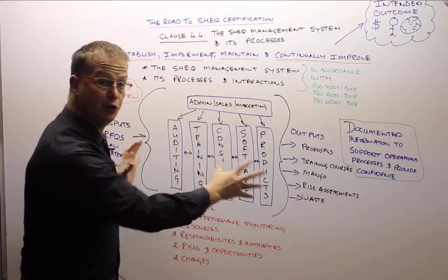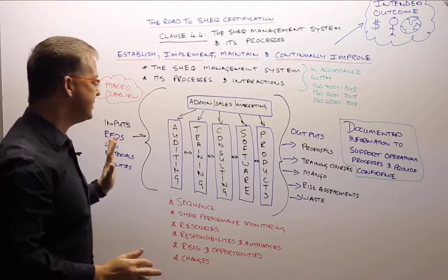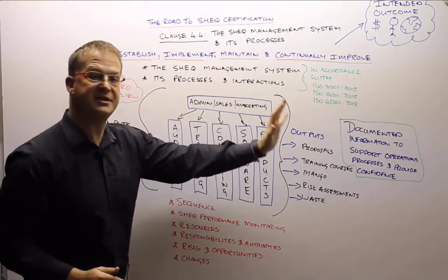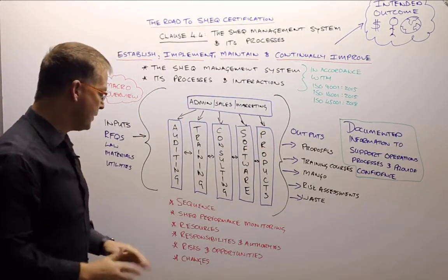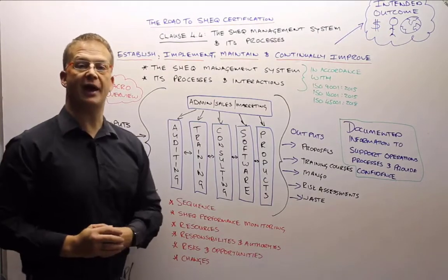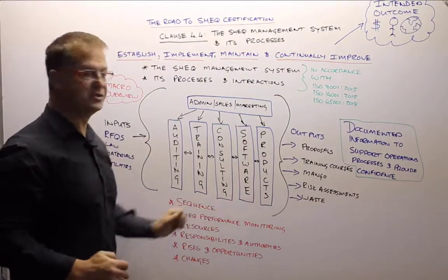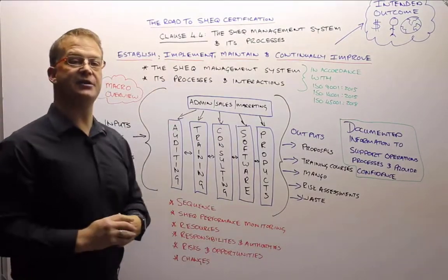We need to have a look at the resources for the processes and interactions. We need to have a look at the roles, responsibilities and authorities through the interactions from inputs all the way to outputs. We need to have a look at risks and opportunities and we need to have a look at how changes would take place through the check management system processes and interactions.